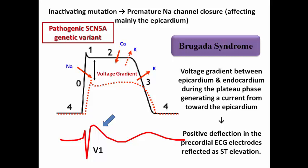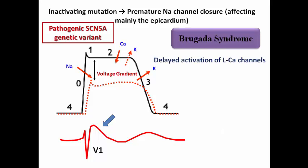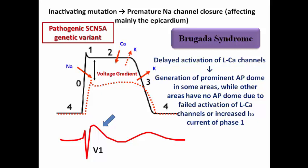This is shown as ST elevation. An additional mechanism relates to activation of the long-lasting calcium channels in the plateau phase, resulting in a prominent action potential dome in certain areas, while other areas lack this dome due to failed activation of these calcium channels or increased Ito current of phase 1 of repolarization.